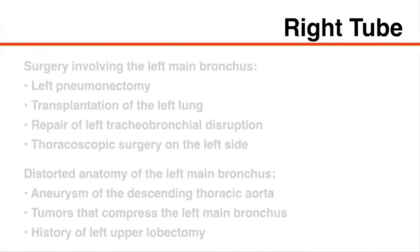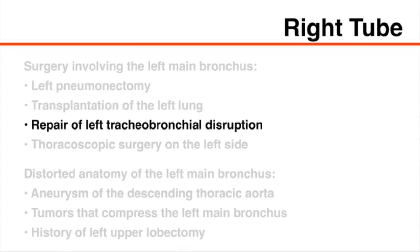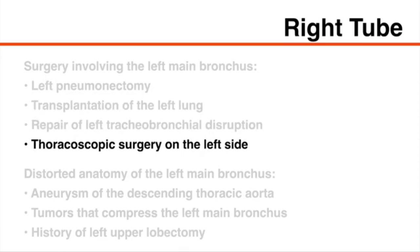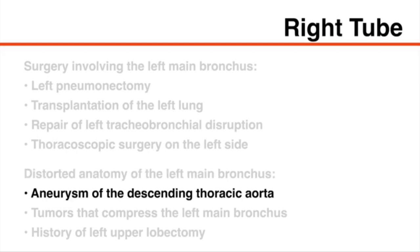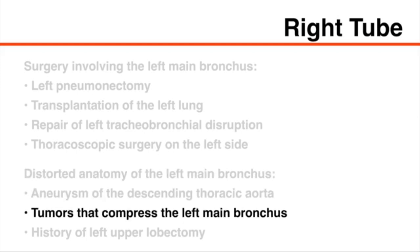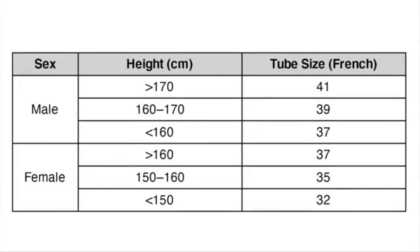Right-sided tubes are used in patients undergoing surgery involving the left main bronchus, such as left pneumonectomy, transplantation of the left lung, repair of left tracheobronchial disruption, thoracoscopic surgery on the left side, and in patients with distorted anatomy of the left main bronchus, which may be caused by aneurysm of the descending thoracic aorta, tumors that compress the left main bronchus, or history of left upper lobectomy. In general, selection of an appropriate tube size is guided by the patient's sex and height.